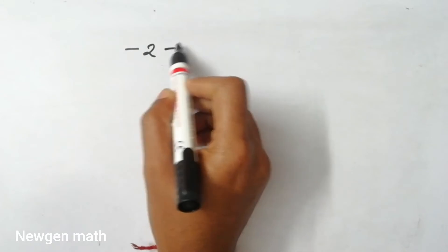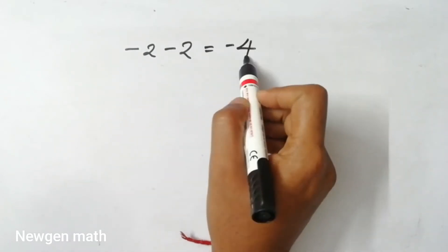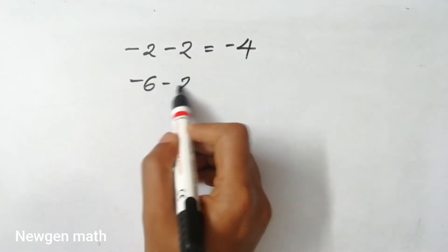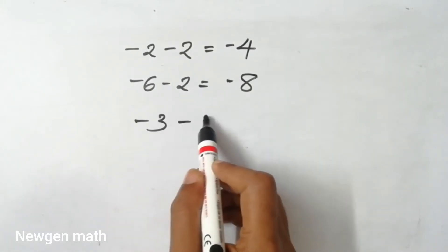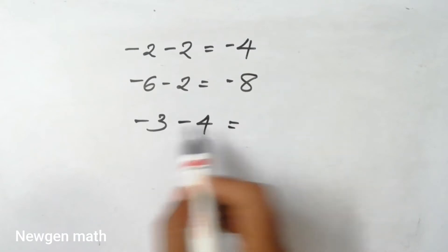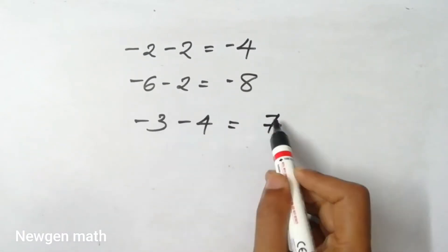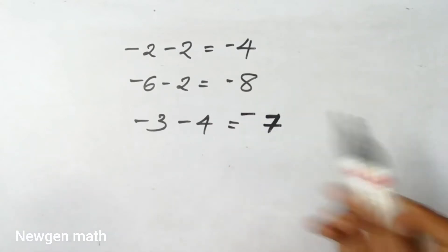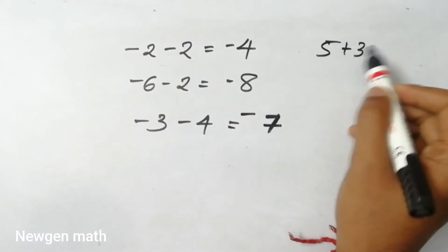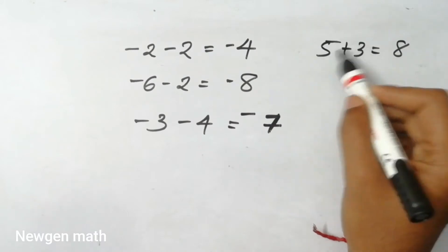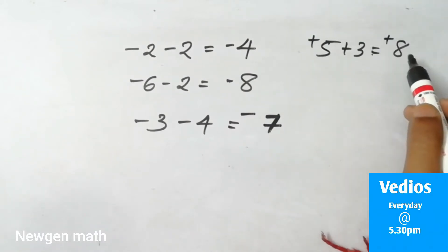If the first answer is minus 2, minus 2, the answer is minus 4. That means minus 6, minus 2, the answer is minus 8. We have to make a tree, so we have to add 4 and 3. So we have to add 5 plus 3.